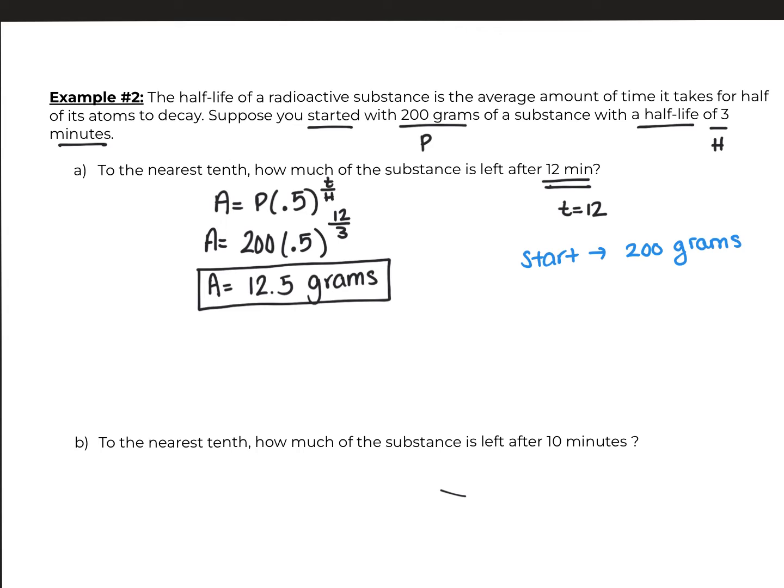Every three minutes, we're going to half. So after three minutes, I want to half this. We know 200 would then go to 100. Then another three minutes would go by, and we'd be at six minutes. Then we would half that. That would be 50.